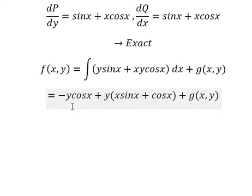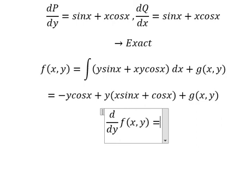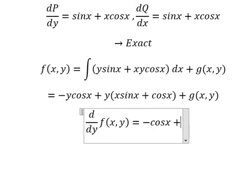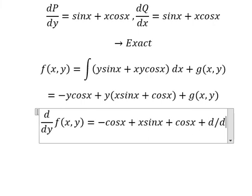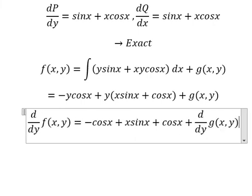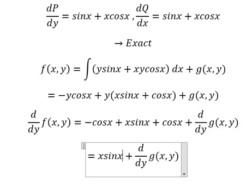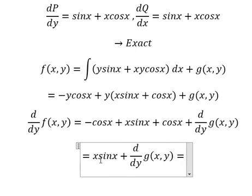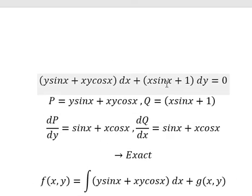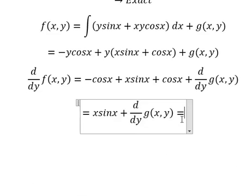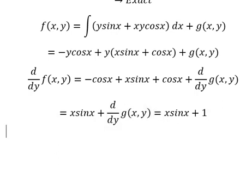Next we need to differentiate with respect to Y for both sides. So we have negative cosine X plus G prime of Y plus cosine X. So this one minus this one gives us G prime of Y. We have negative cosine X, and we know that this one equals to this one. Now we simplify and we have number 1.